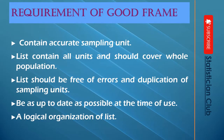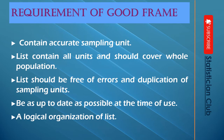Requirements of a good frame. Number one: a good frame contains accurate sampling units — the sampling units should be accurate. Number two: the list contains all units, with no single unit missing, and should cover the whole population with complete sampling units. Number three: the list should be free of error and duplication of sampling units — there should be no error and no sampling unit repeated at the time of formulation.